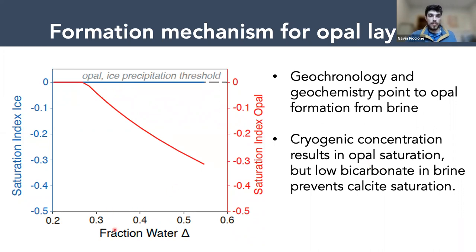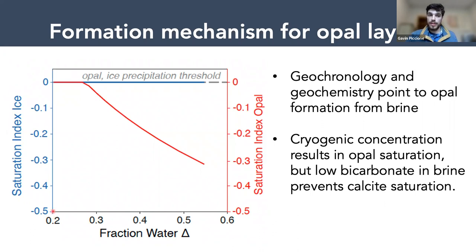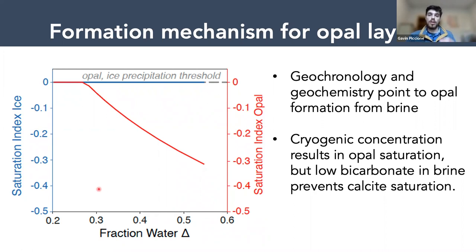Work by Bernard Halle and by my advisor Terry Blackburn shows cryogenic concentration in alpine glaciers is a good way to achieve opal precipitation. Modeling subglacial freezing, I plot the saturation index of ice and opal as I increase the fraction of water frozen — from 40% frozen on the right to 80% frozen on the left. In order to cross the opal precipitation threshold, you need to freeze around 70% of the water in the subglacial reservoir. This is a positive result: it shows cryogenic concentration can indeed precipitate opal from a brine precursor.